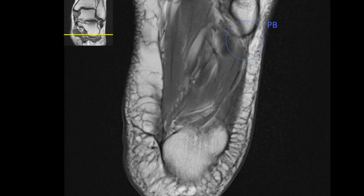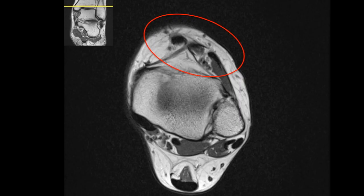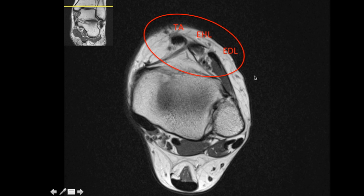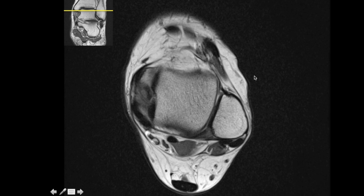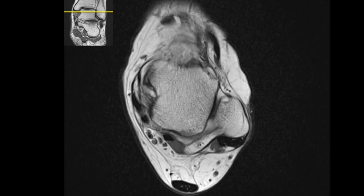Now we look at the anterior or extensor compartment, again going from superior to inferior. It also consists of three tendons, and the medial most tendon is the tibialis one — so this is the tibialis anterior. Anteriorly the relation is reversed compared to the medial compartment: it becomes tibialis anterior, extensor hallucis longus, and extensor digitorum longus. Remember, the extensor tendons are less involved compared to the medial flexors or the peroneal tendons.